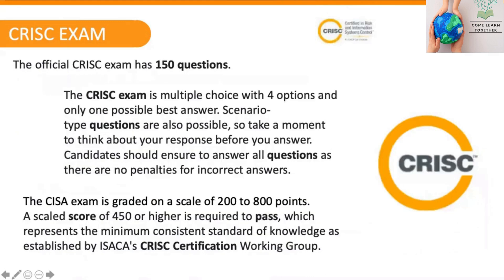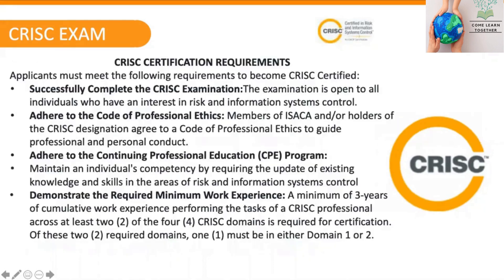The official CRISC exam has 150 questions with four options each. The grading scale is 200 to 800 points, and a score of 450 or higher is considered a pass, which will allow you to attain the CRISC certification.